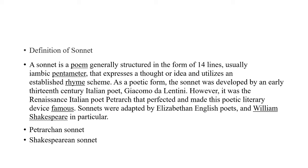The Shakespearean sonnet falls into three quatrains — each a four-line stanza — and a concluding couplet. The rhyme scheme of the English or Shakespearean sonnet is: A B A B C D C D E F E F G G. There was a notable variant, the Spenserian sonnet, in which Spenser linked each quatrain to the next by continuing rhyme: A B A B B C B C C D C D E E.